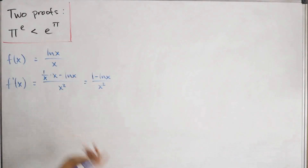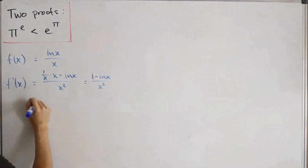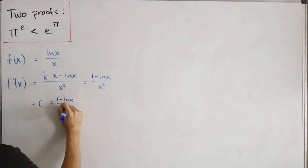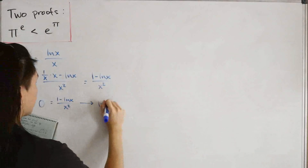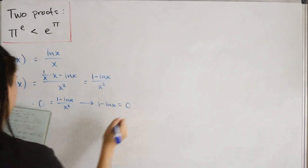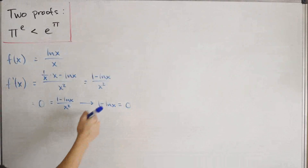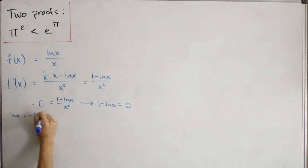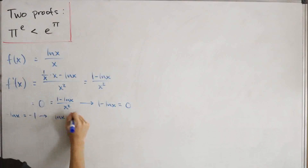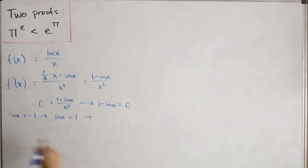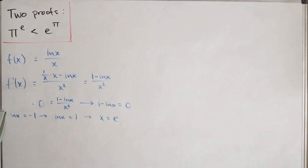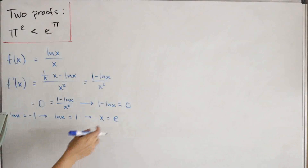Setting f'(x) = 0, we have (1 - ln x) / x² = 0, which implies 1 - ln x = 0. Solving for x: ln x = 1, and taking e to both sides gives x = e. So e is our critical point.